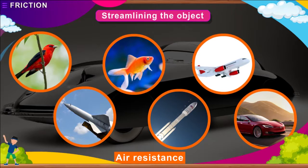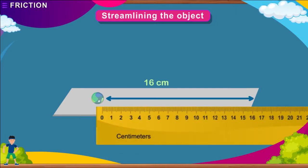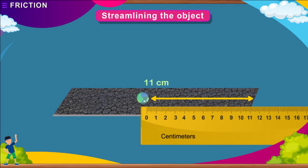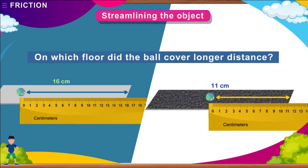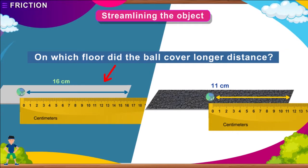Here is an activity to prove that friction depends upon the nature of the surface in contact. Take a ball and roll it on a cemented floor and measure the distance covered. Repeat this on a rough, kaccha surface and measure the distance, rolling the ball with the same force. On which floor did the ball cover a longer distance? It will cover a larger distance on the cemented floor, because the frictional force between the cemented floor and the ball is less. We can conclude that friction depends upon the roughness or smoothness of the surface in contact.